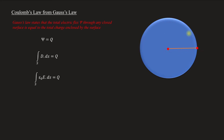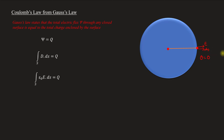So this Gaussian surface will be considered. In this surface, we look at ds and E — the resultant is in the same direction. So the angle between them is zero. Here we have a dot operation, and E dot ds expansion is E ds cos theta.